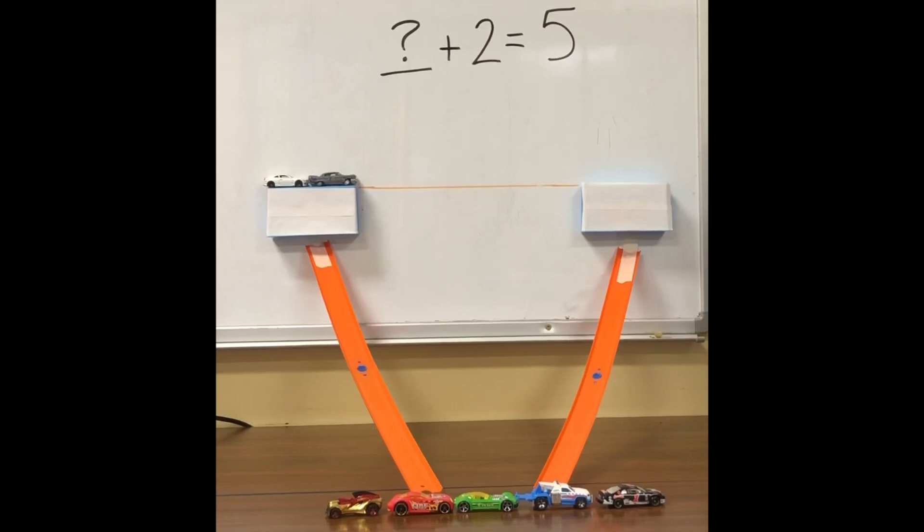We know that one of the addends is 2. We have 2 cars. The other addend is unknown. But we do know our total. Our sum is 5. So if we wanted 5 cars at the bottom of our ramp, and we had 2 cars on this ramp...